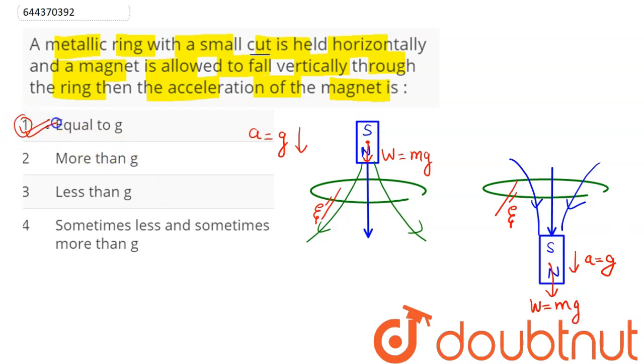So in both the cases the acceleration of the magnet equals g, that is option number one is the correct answer. Hence one is our answer.